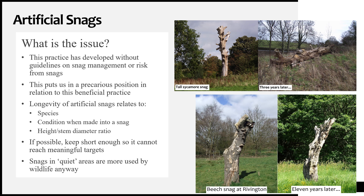So there's a trade-off to be had here. It may be tempting to keep more of the height of a tree stem when creating an artificial snag, so you're keeping more dead wood resources for site biodiversity. However, the higher you go, the less longevity you'll get from the snag in general, and the greater the risks will be that are associated with it.